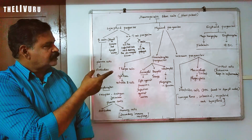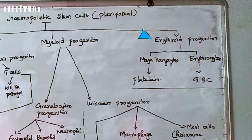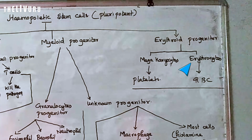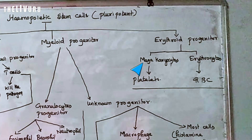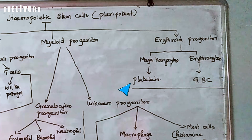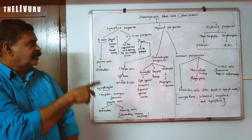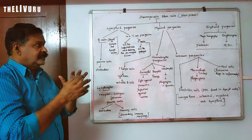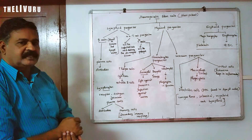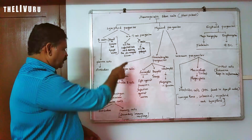The erythroid progenitor gives rise to two different cells: Megakaryocyte and Erythrocyte. The Megakaryocyte produces platelets. The lymphoid progenitor gives rise to lymphocytes.